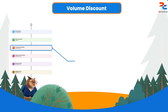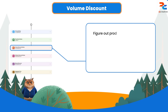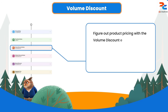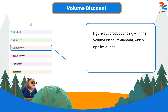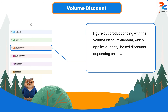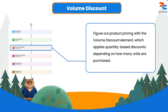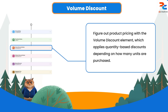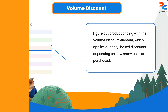Next we have the volume discount entries. This element calculates the product price by applying a discount based on quantities purchased. For example, if a company is buying more than 100 laptops, we can give an extra discount to that particular customer using the volume discount entries.